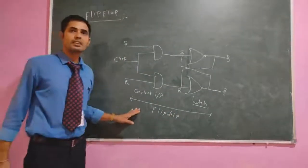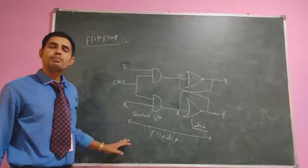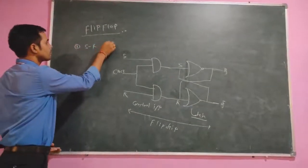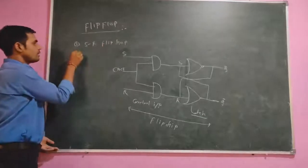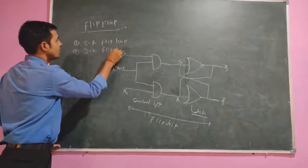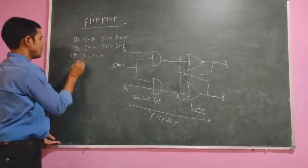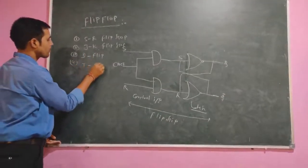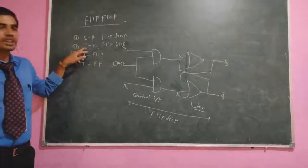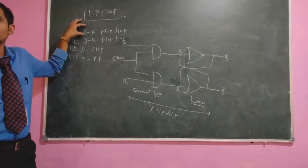We can say that there are four types of flip-flops. The first one is the SR flip-flop, and the second one is the JK flip-flop.